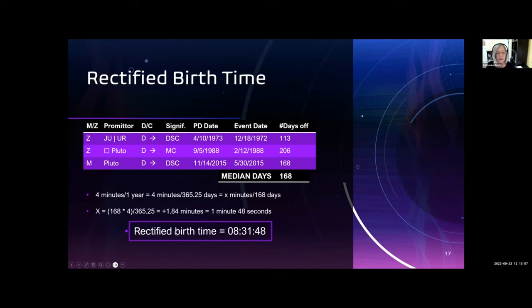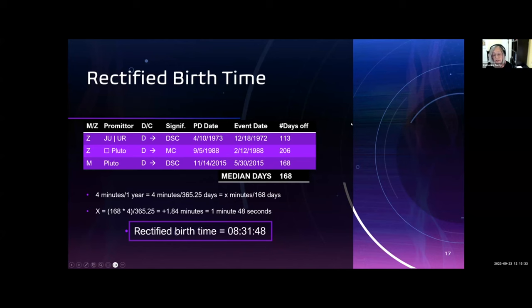Taking these data points, to rectify the birth time, I found the best fit of the data to the event dates. All of the primary directions for the 8:30 time occurred around five or six or seven months after the event date. A little math gave a rectified time of 1 minute 48 seconds later, which gives a rectified birth time of 8:31 and 48 seconds.